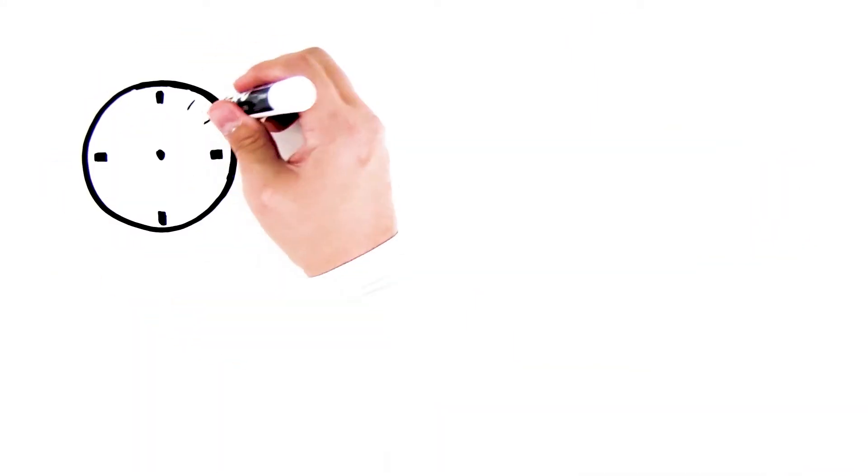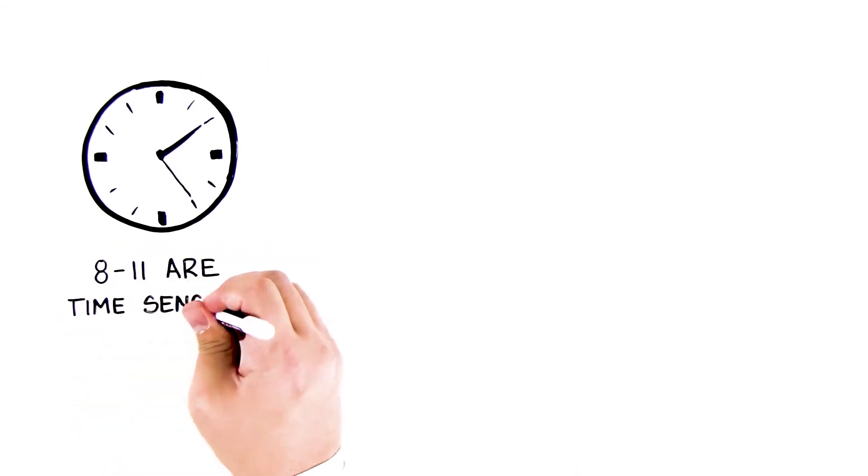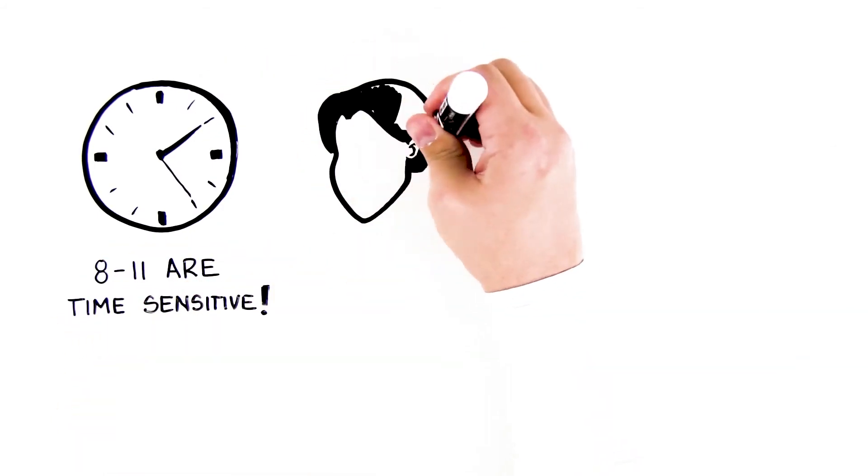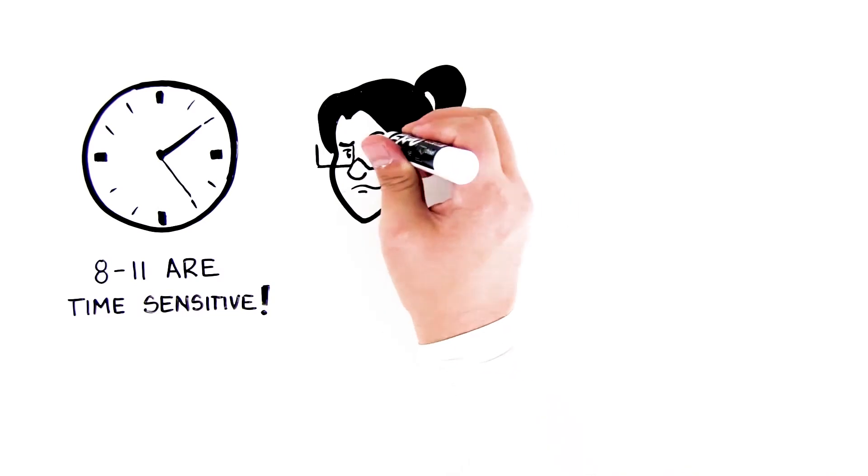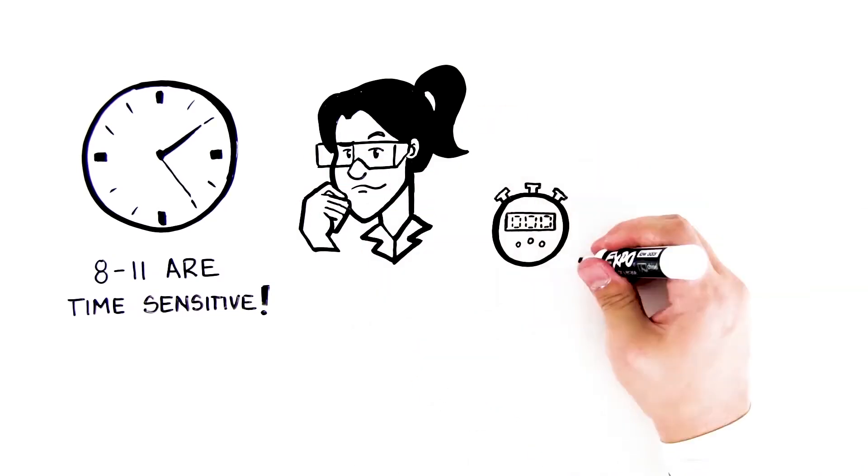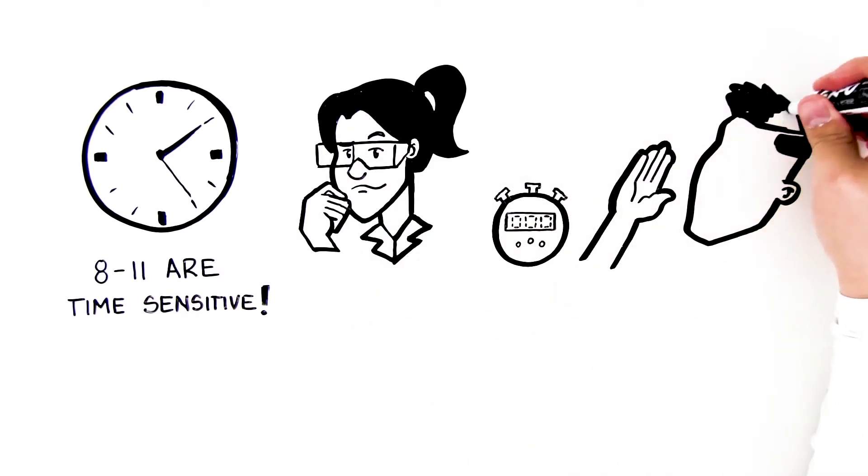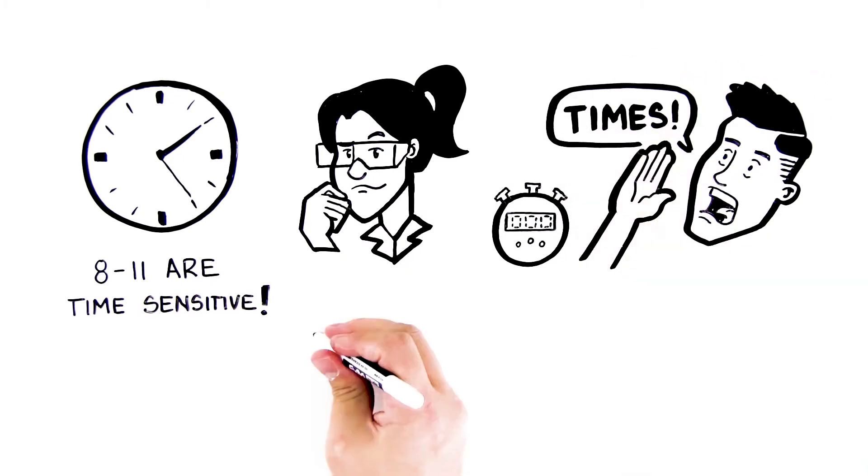The following steps, 8 through 11, are time sensitive. Make sure you understand the procedure and are ready before you start doing this part of the lab. Make sure you have a timing device and someone in your group is assigned to call off the times.